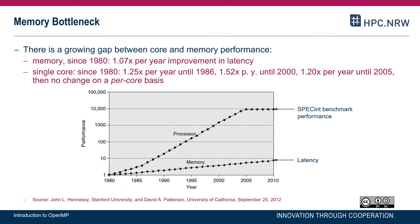The performance of the memory subsystem is measured as latency. Since 1980 we see an average performance improvement in latency per year of 1.07, so less than 10%. While on the processor side, single-core performance measured with SPEC INT sees increases between 25% and a little bit above 50%, depending on the range of years you're looking at. Processors are becoming faster at a higher rate than memory.